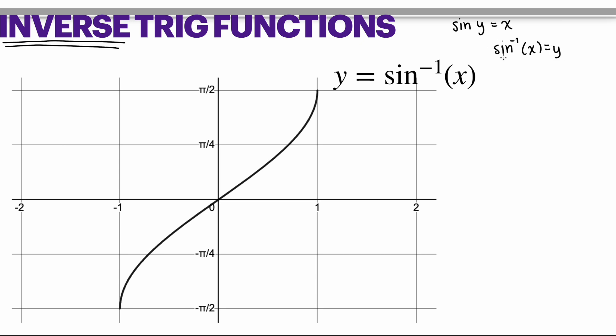For example, for sine, when you think of the coordinate point on the unit circle at π/2, sine of π/2 is 1. But if sine of π/2 equals 1, instead of having the coordinate point π/2, 1, you now have the coordinate point 1, π/2.